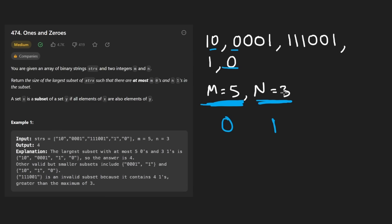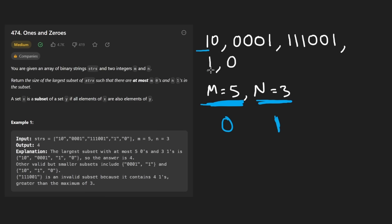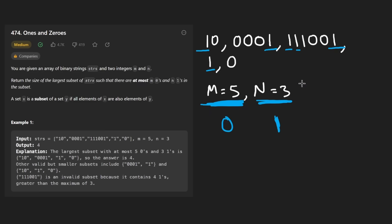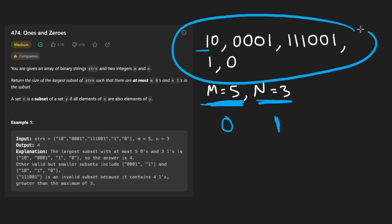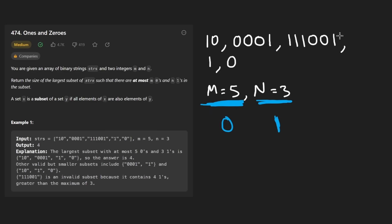How many ones would we get in that case? We're allowed to get three, but we would get one, two, three, four, five, six, seven — more than we're allowed to get. So we definitely can't take all five of these strings.